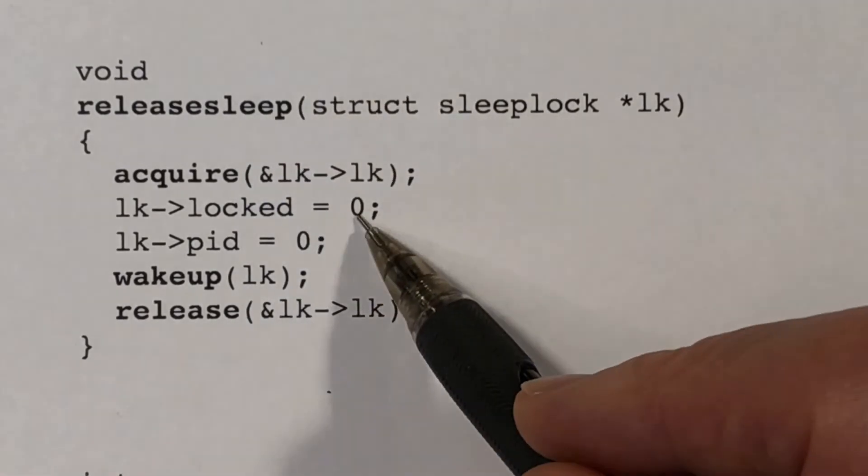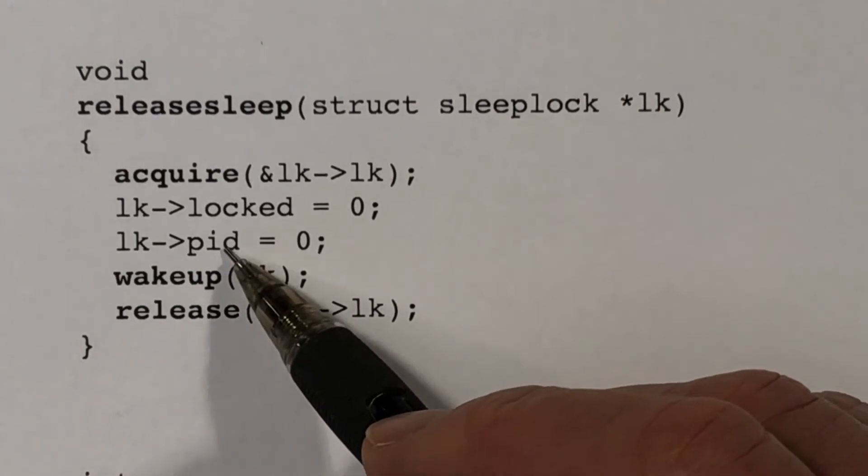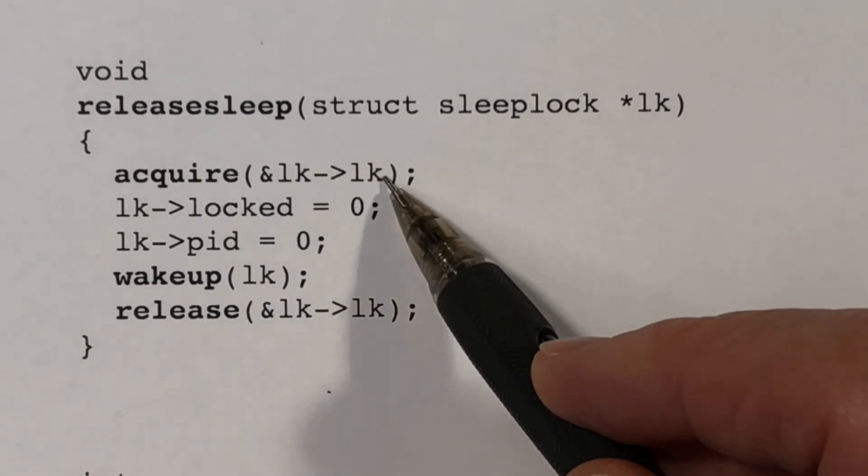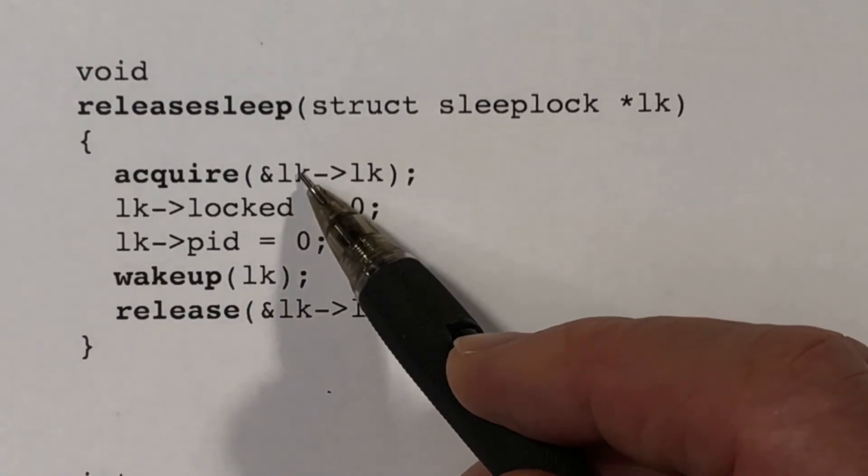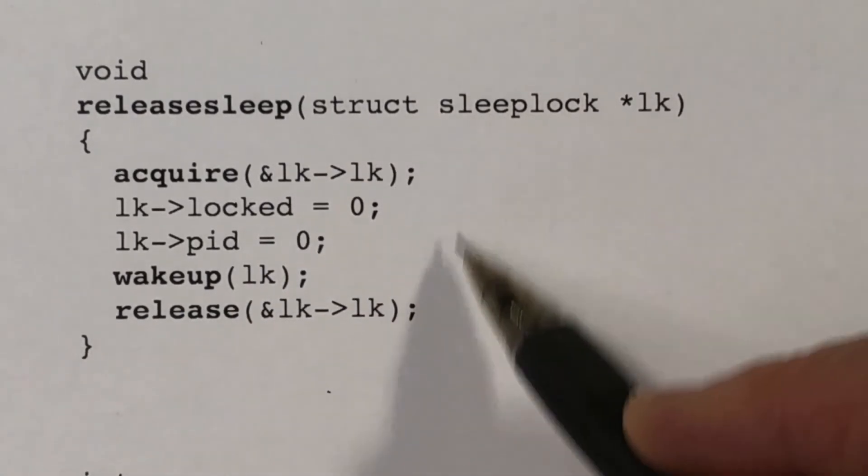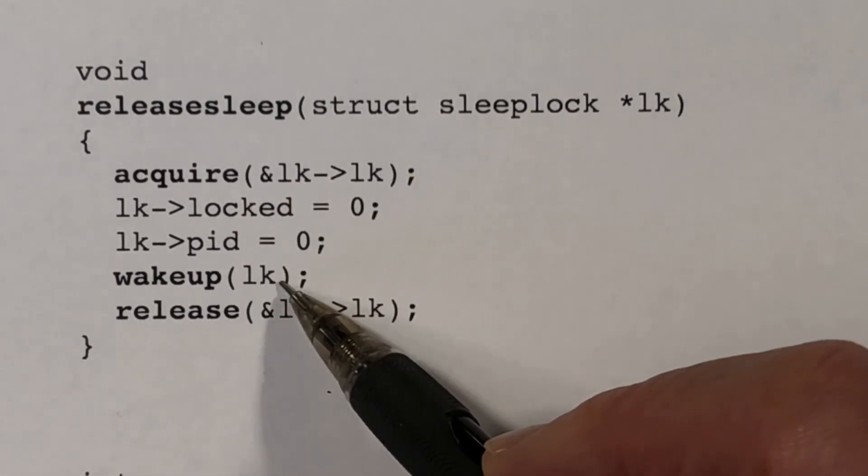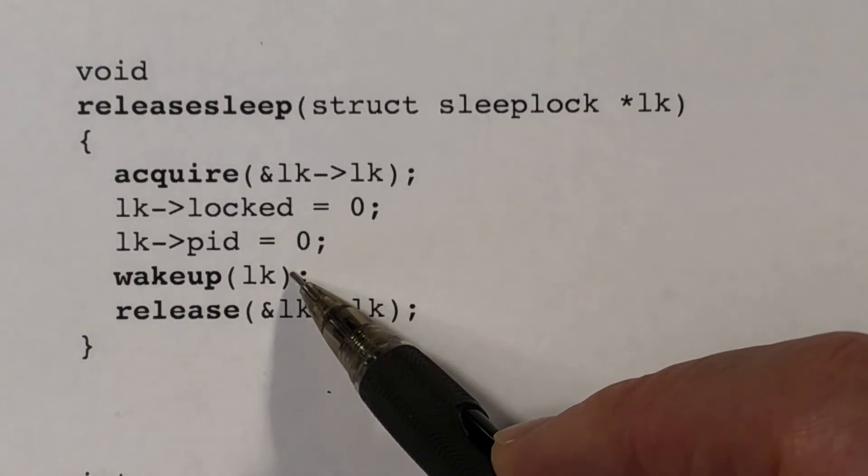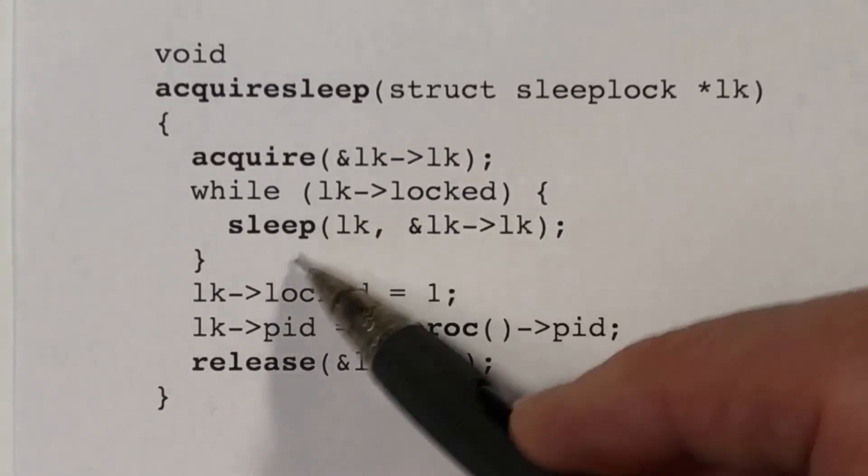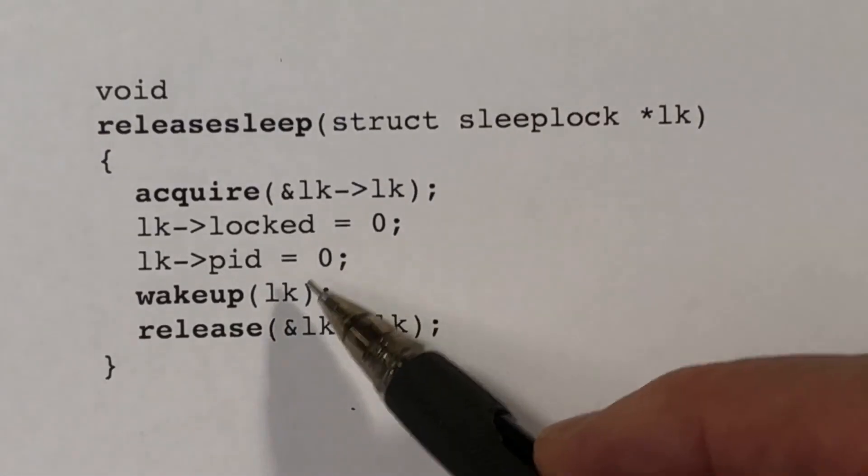Releasing is similar. We will be setting the lock flag to false and clearing out the process ID. But of course, we have to acquire the spin lock since we will be accessing the fields that are protected by the spin lock. So we acquire the spin lock. And then here's the matching release. But before we release it, we also want to wake up any other sleep locks that might have gone to sleep. So we're now releasing the lock. And it could be that there are other threads that are in this loop here sleeping, and we need to wake them up so that one of them can grab the lock and proceed.